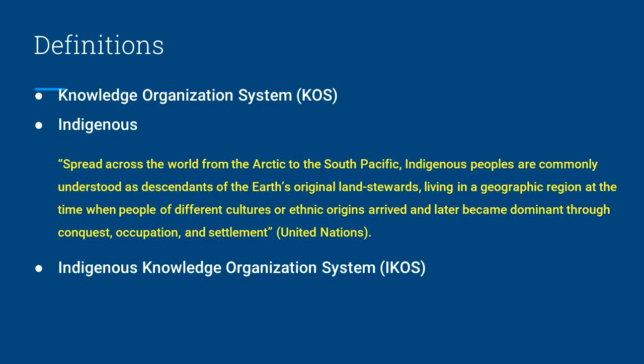There are over 476 million Indigenous peoples living around the world today. As with any word attempting to identify a diverse group of people, this general term is limited and often contentious. The United Nations acknowledges that it cannot define Indigenous peoples. Instead, it seeks to identify Indigenous peoples based on their self-identification, historical continuity to pre-colonial and/or pre-settler societies, links to territories and surrounding natural resources, distinct social, economic, and political systems, and possession of distinct languages, cultures, and beliefs.